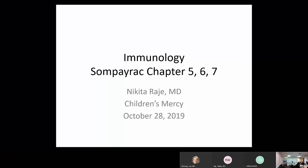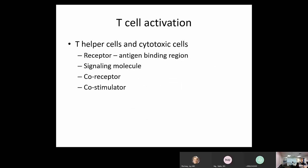Moving on to Chapters 5, 6, and 7. A refresher of what we've already talked about: the cells of innate immunity — macrophages, neutrophils, natural killer cells — complement, B cells, and antigen presentation. Antigen presentation is done for the T cells for their jobs. Now we're going to talk about T cells and lymphatic tissues. We'll start with T cell activation.